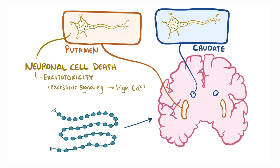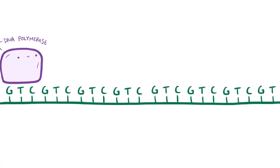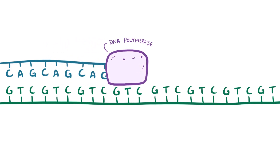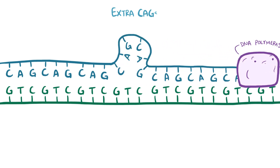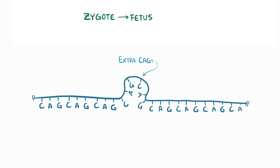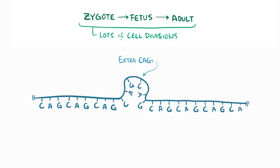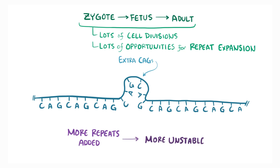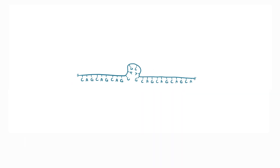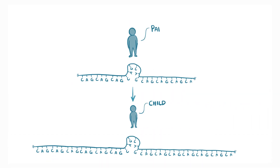The expanded CAG repeats not only affect the Huntington protein, they also affect DNA replication itself. When copying the HTT gene, DNA polymerase can basically lose track of which CAG it's on, and accidentally add extra CAGs. Since as a zygote develops into a fetus and eventually into a full adult, by the time sperm and eggs are created, several dozen cell divisions, each with a round of DNA replication, have taken place, and so there have been a lot of opportunities for repeat expansion. The more repeats that are added, the more unstable it gets. This expansion of the originally inherited gene means that a child of a parent with HD can inherit even more CAG repeats than the parent did.